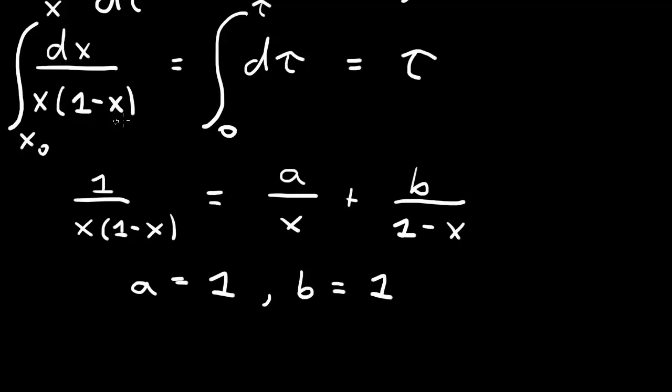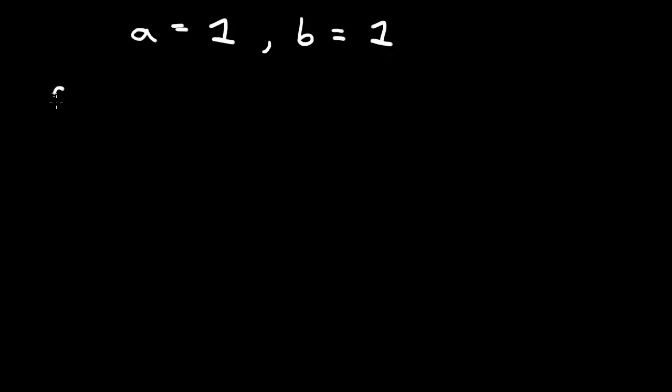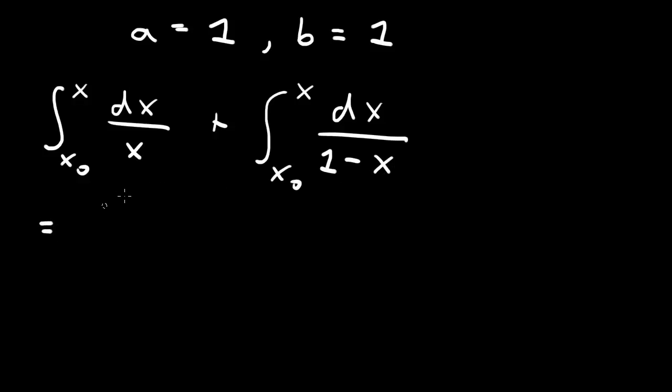Now we can rewrite this one. We have the integral from x₀ to x of two pieces: 1 over x plus 1 over (1 minus x). So the integral from x₀ to x, one piece is 1 over x, so dx over x. The other is the integral from x₀ to x of the second piece which is 1 over (1 minus x), so dx over (1 minus x). These are logs, so this first one is log(x/x₀).